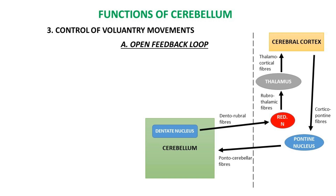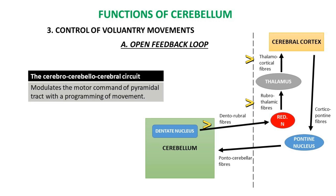Efferents go to the cerebrum via the dentorubrothalamic cortical tract, which consists of dentorubral fibers starting from the dentate nucleus, passing via the superior cerebellar peduncle to end in the red nucleus on the opposite side. Rubrothalamic fibers travel from the red nucleus to the thalamus, and thalamocortical fibers project from the thalamus to areas 4 and 6 of the motor cortex. The cerebro-cerebello-cerebral circuit modulates motor commands of the pyramidal tract with programming of movement.